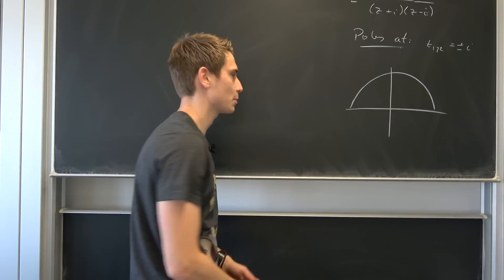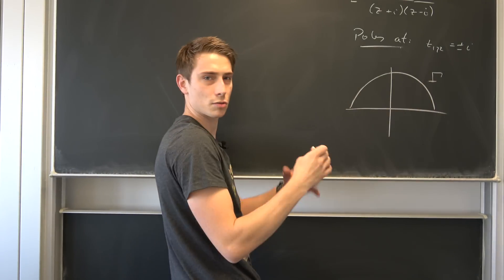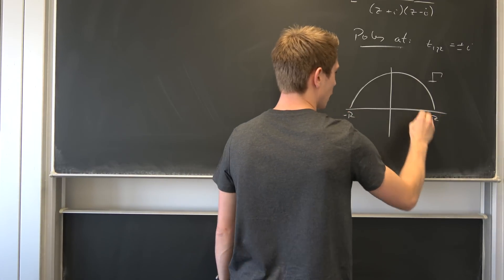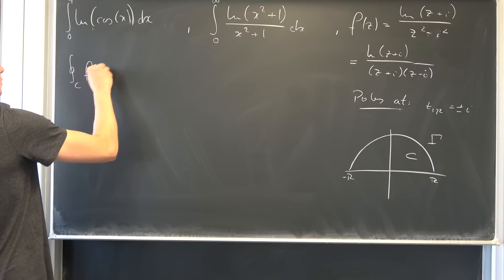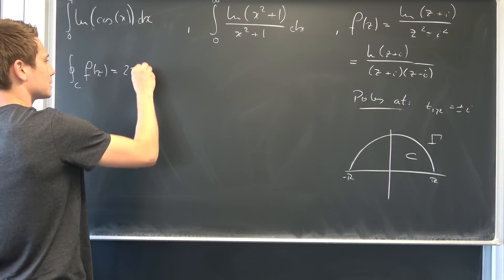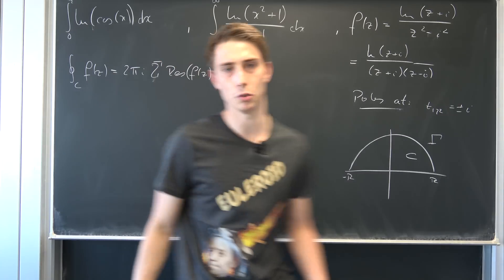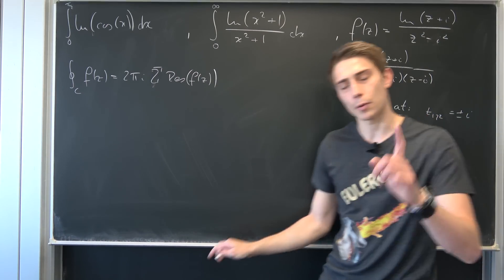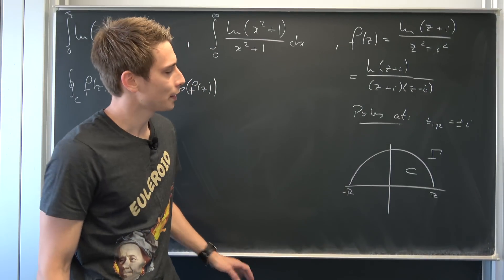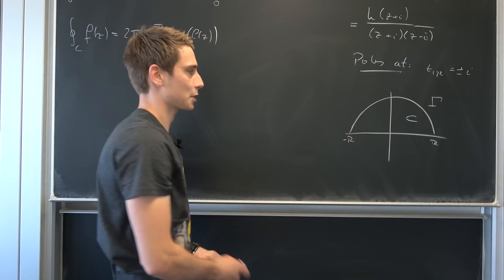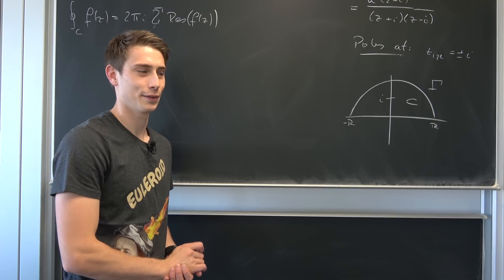Now I would like to set an appropriate contour to work with. Let's take a look at the complex plane — we take the upper half of the complex plane with a semicircular arc gamma going from negative R to R. This is our contour C. The contour integral of f(z) is nothing but 2πi times the sum of the residues of f(z). Since we're in the upper half-plane, we only have to deal with the pole at z = i.